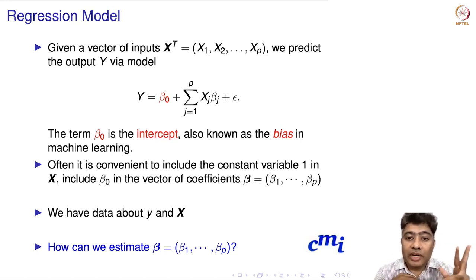In p dimensions—more than three dimensions—we cannot visualize, so we have to imagine that in p dimensions it will fit a p minus one dimensional hyperplane. This is what this model does—it fits a p minus one dimensional hyperplane in a p-dimensional data space.